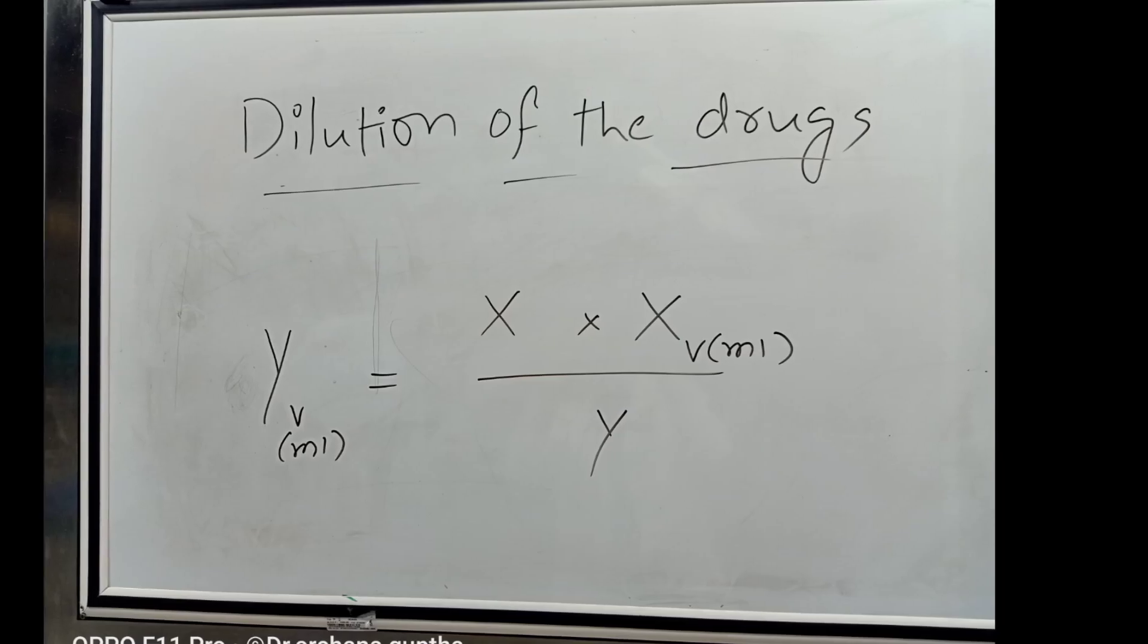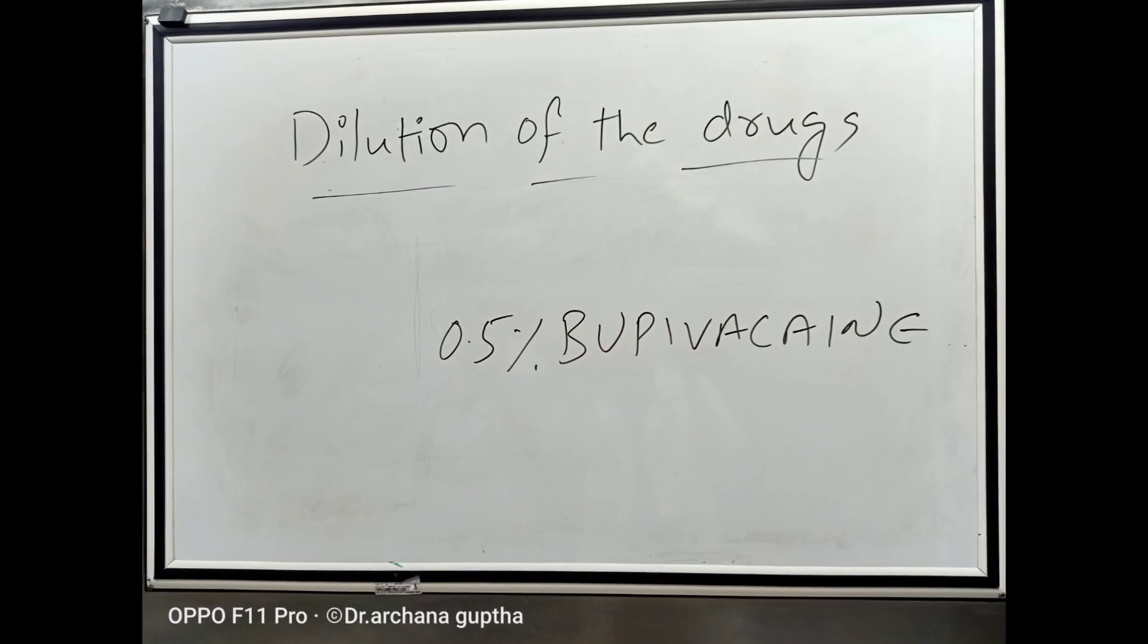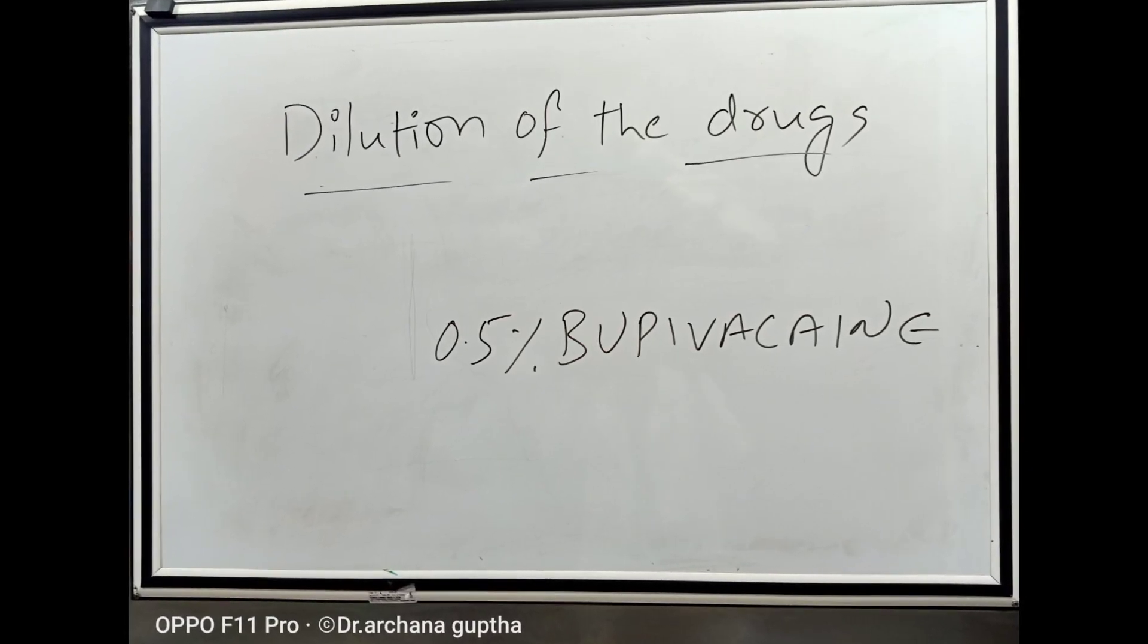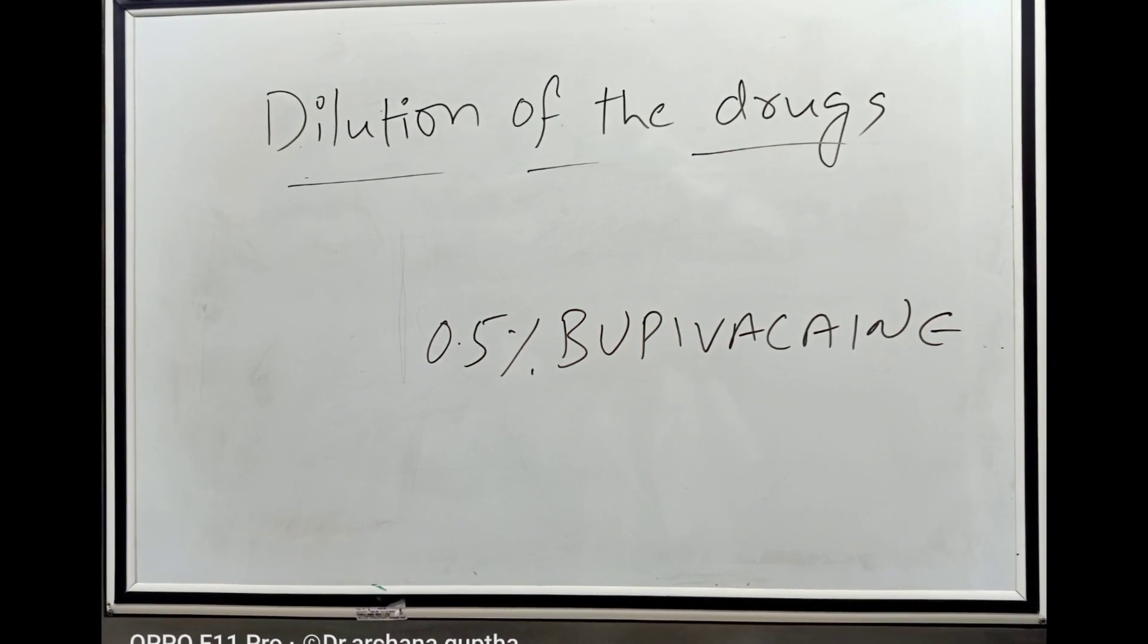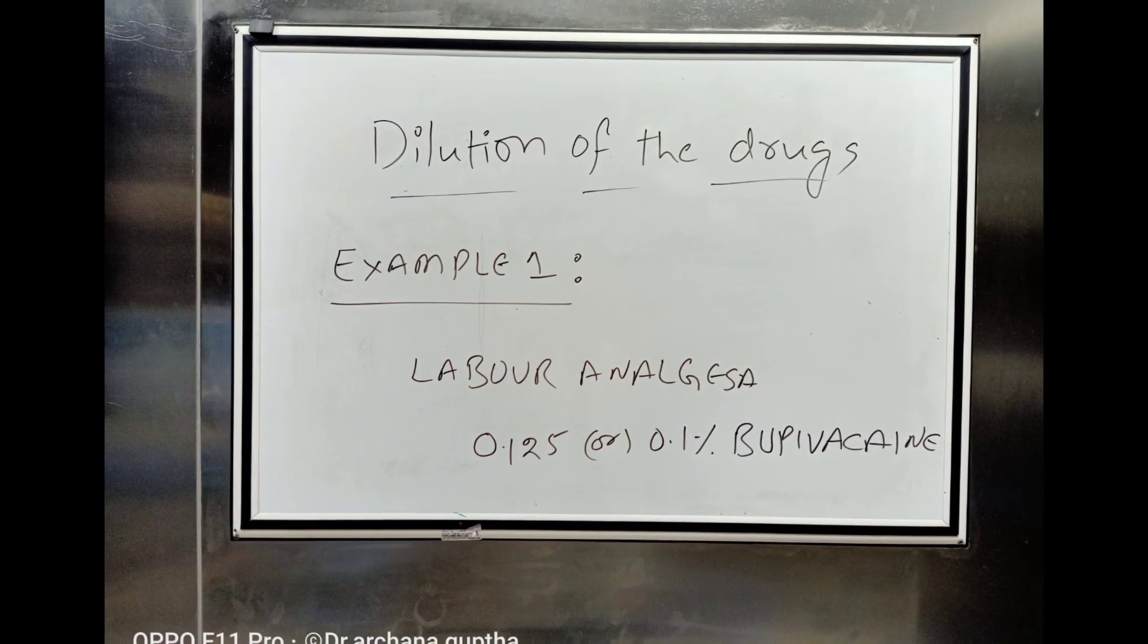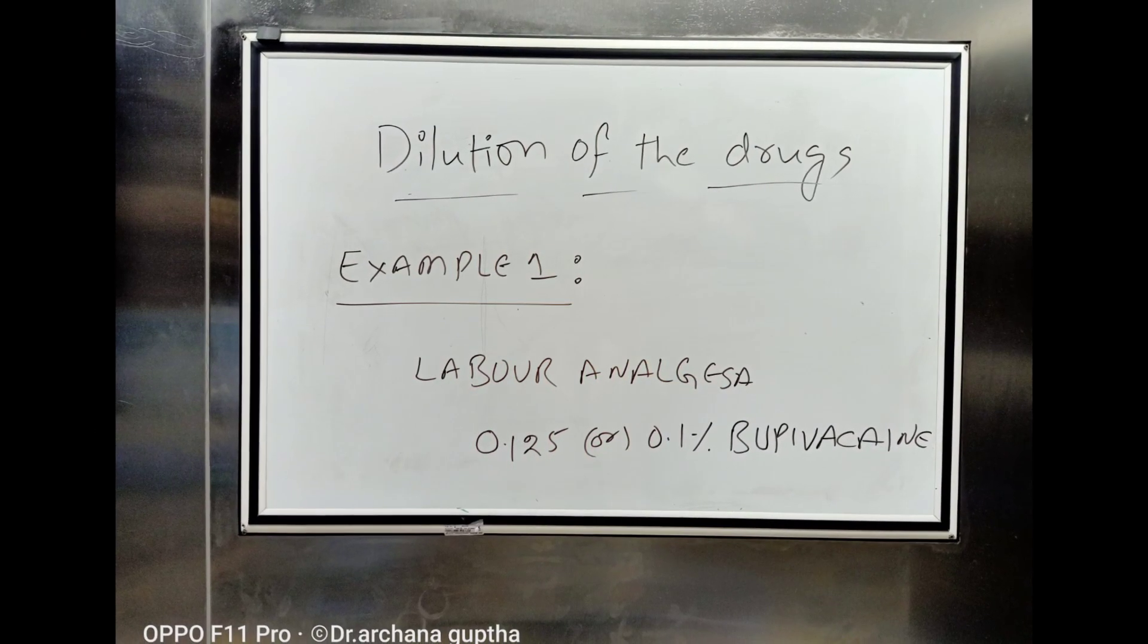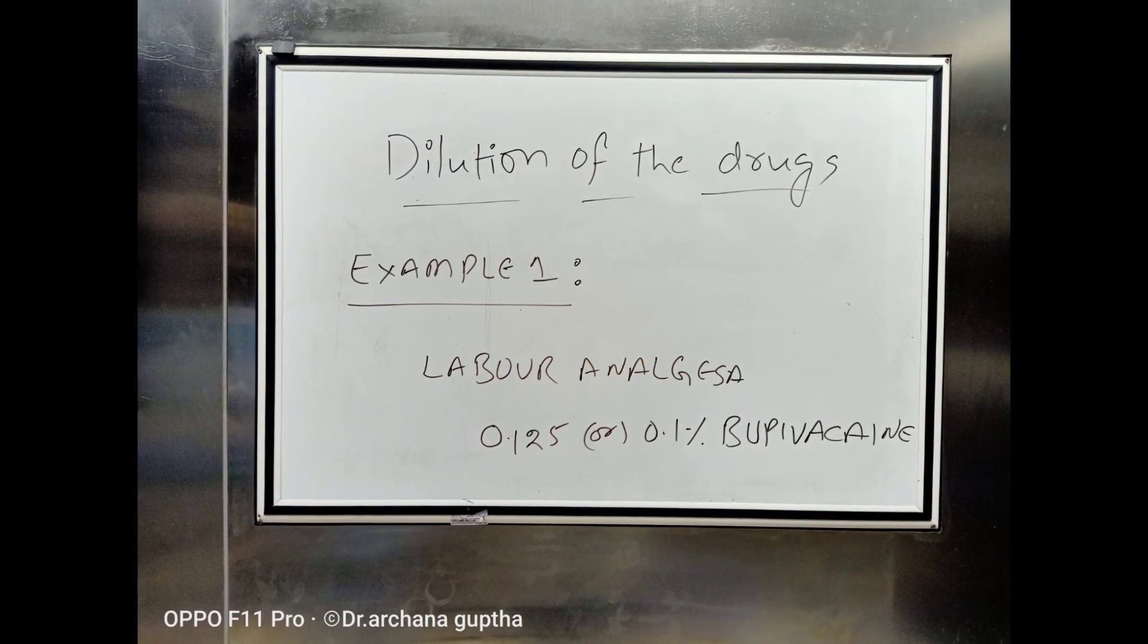Let us apply this formula using some of the anesthesia drugs. Here I take 0.5% concentration of bupivacaine local anesthetic solution in all the following examples. Coming to example 1. Usually, in labor analgesia, 0.125% or 0.1% concentration of bupivacaine solutions are used.